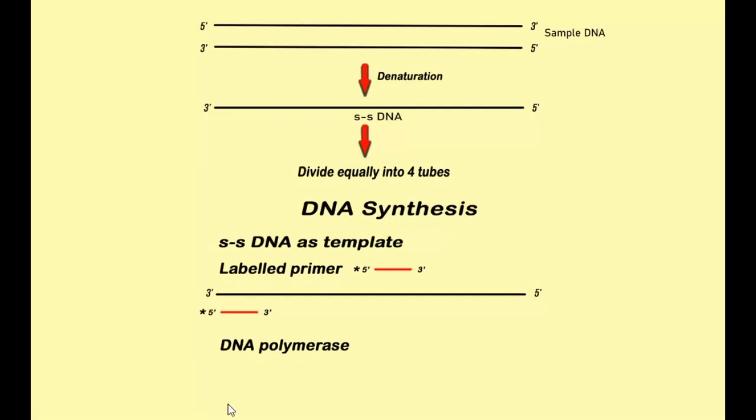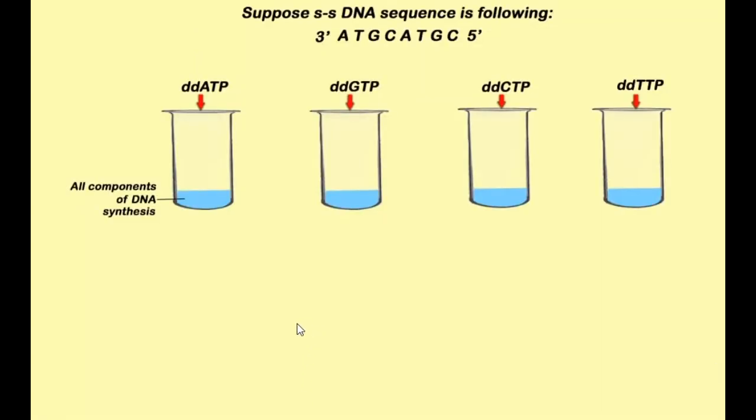Another component required is DNA polymerase. This is an enzyme which catalyzes the reaction. Then we also need 4 different dNTPs: dATP, dTTP, dGTP, and dCTP. These will be required in large amount. And very small amount of ddNTP is also required. All these components will be needed in all 4 tubes. But this ddNTP will be needed - one type of ddNTP in each tube. That's how we will know which ddNTP is in which tube.